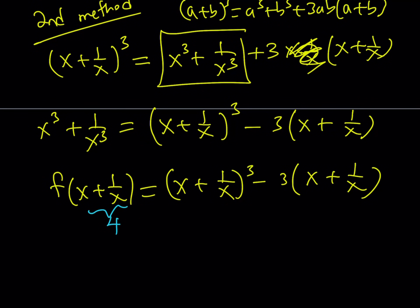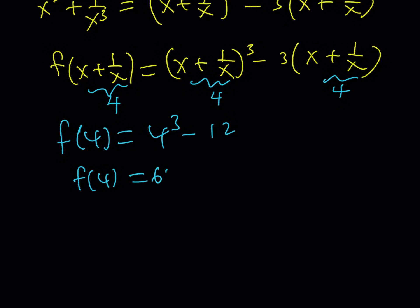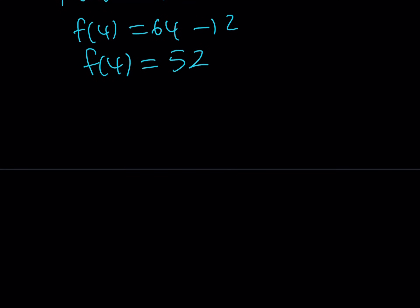So I need to replace x plus 1 over x with 4. But I don't care what x is - I can basically replace it everywhere. And from here, f of 4 is going to be 4 cubed minus 3 times 4, which is 12. And 4 cubed is equal to 64. 64 minus 12, that is going to give me the same answer as before. And f of 4 is going to be 52.